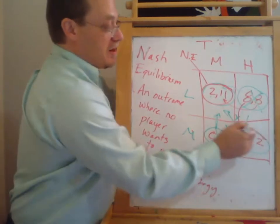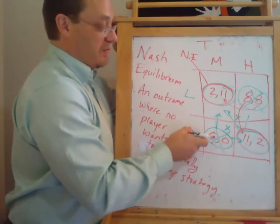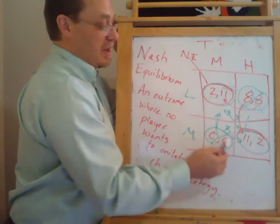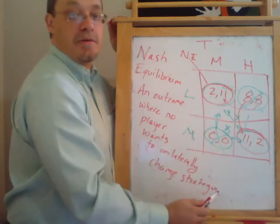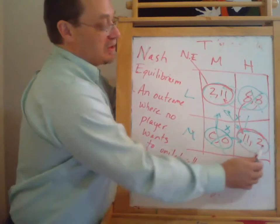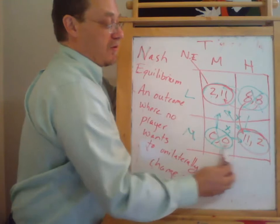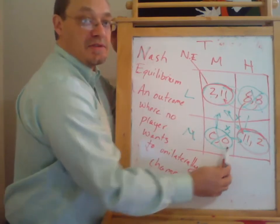But this over here is another Nash Equilibrium because if we start here in this corner, is Kmart going to want to switch to low? No, because then it would get eight instead of eleven. Is Target going to want to switch columns over to here? No, because then they would get two rather than zero.